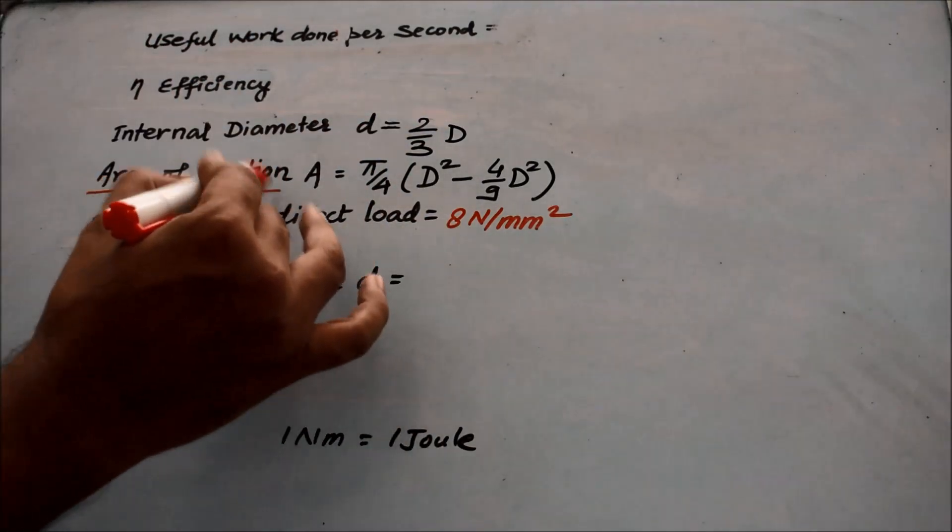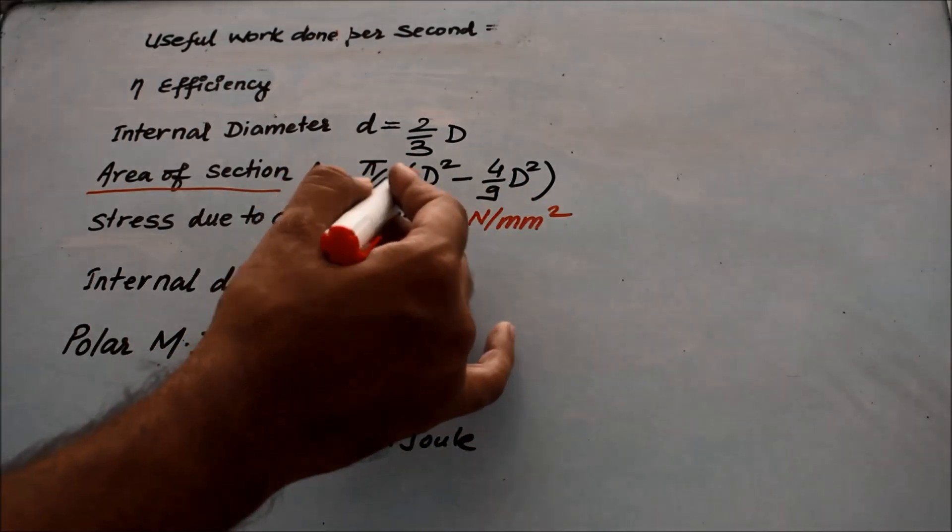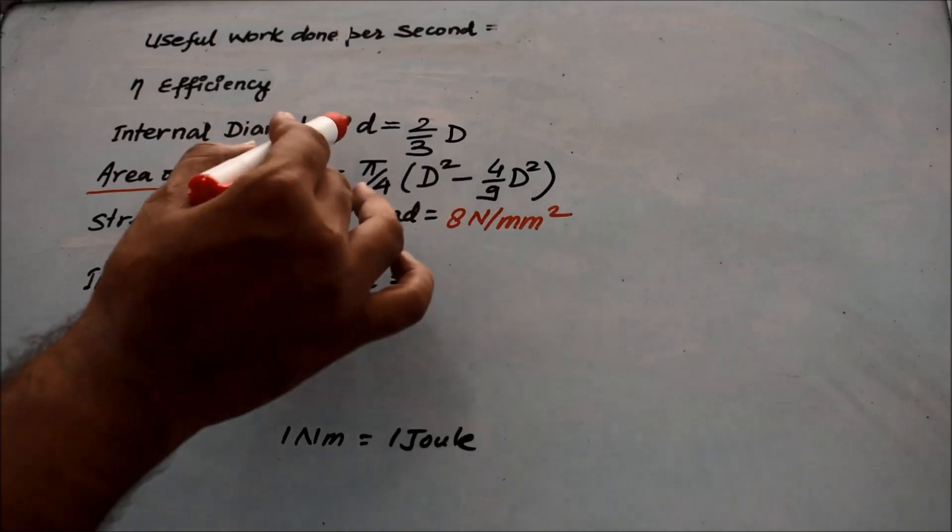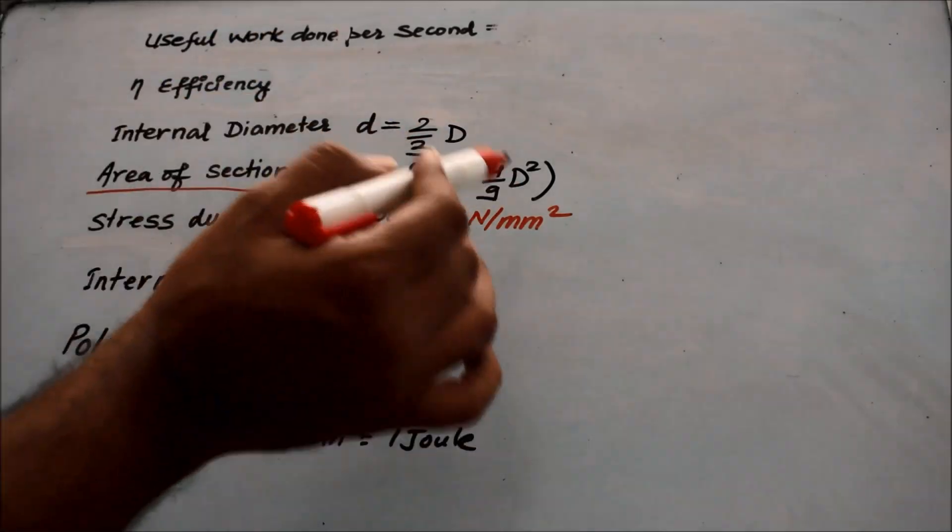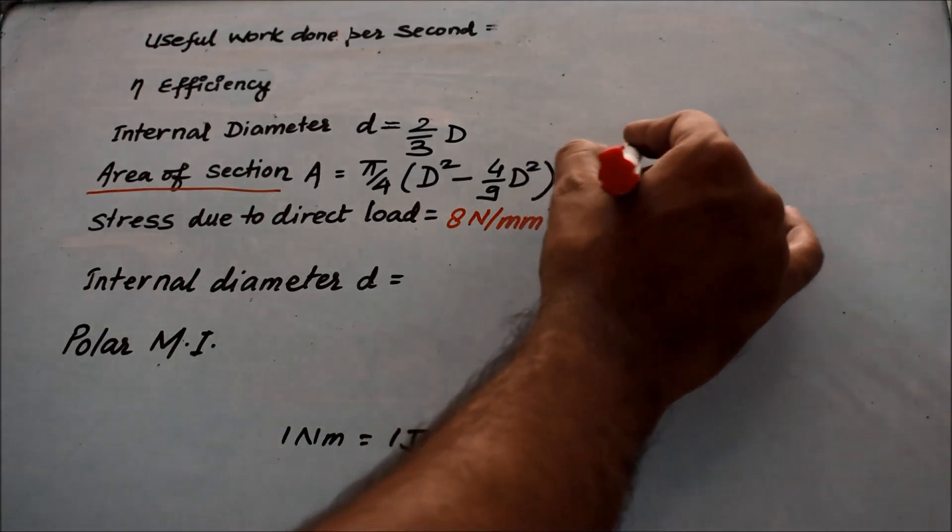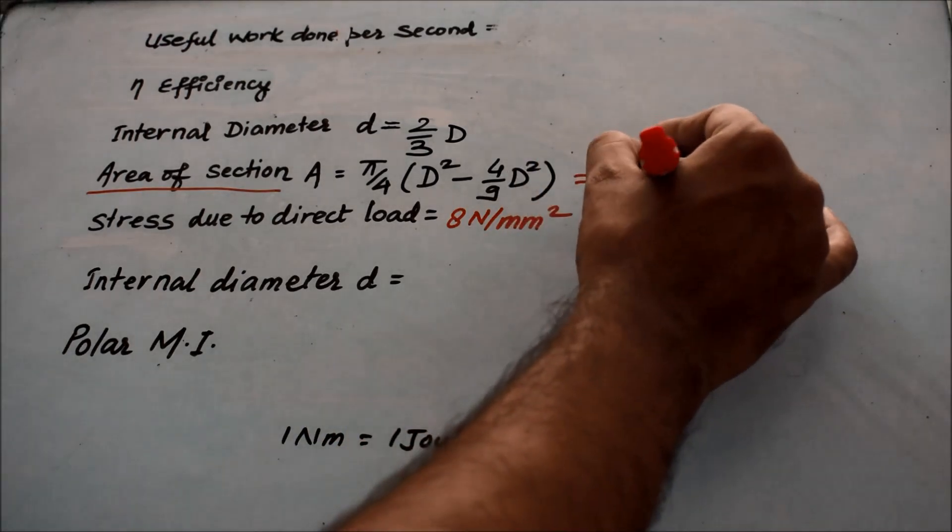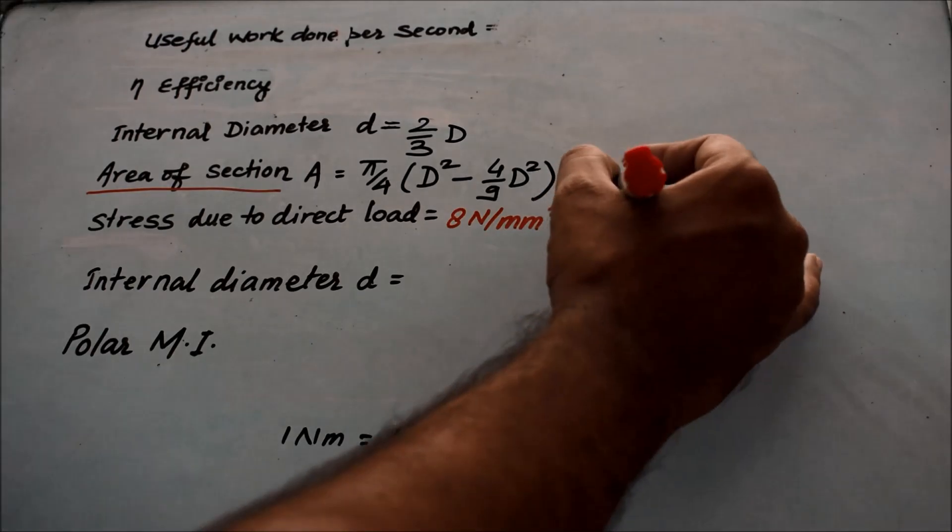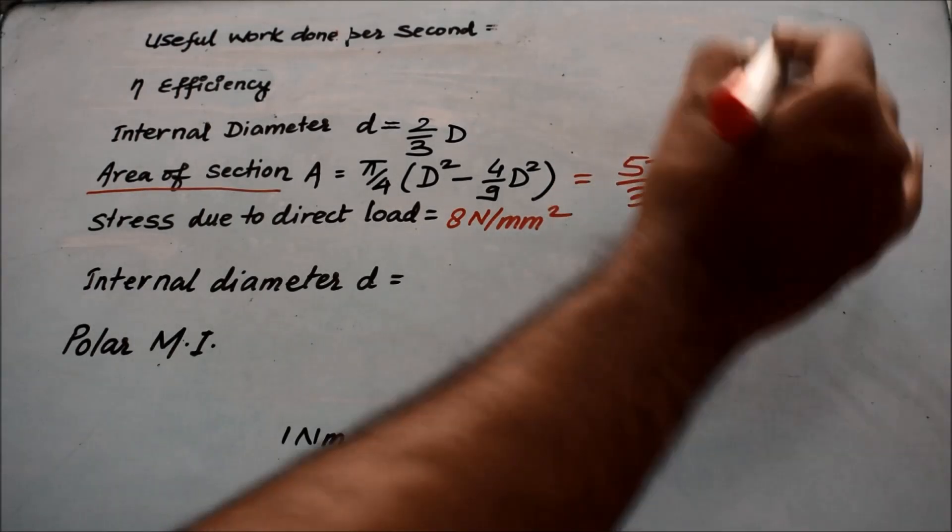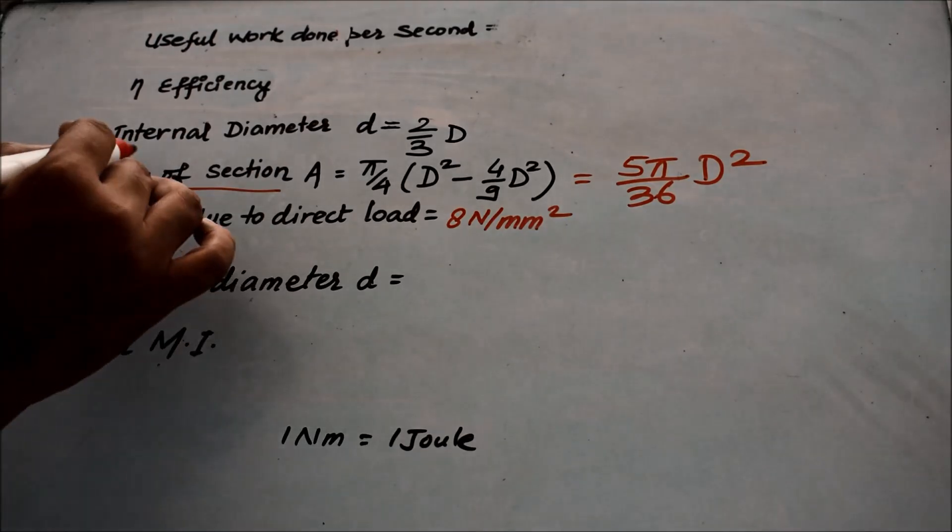As usual, what we do is find the area of the section. For that, I have written pi by 4 capital D square minus, in place of small d square, I put the value of small d that is provided in the question. When I solve it, I will get the value as 5 pi upon 36 capital D square. So this is the value of area that I have got.